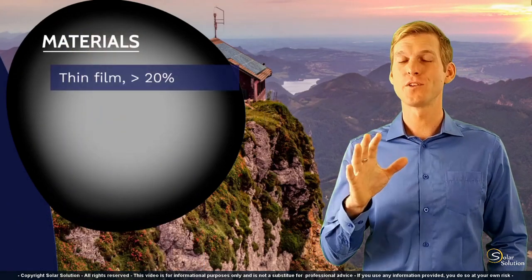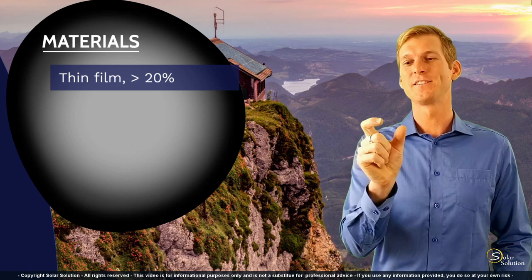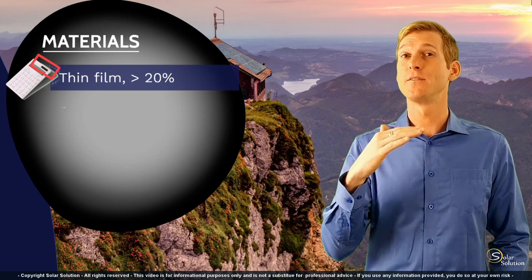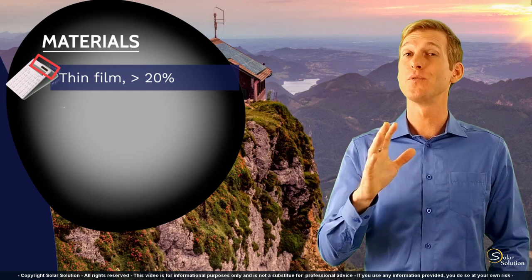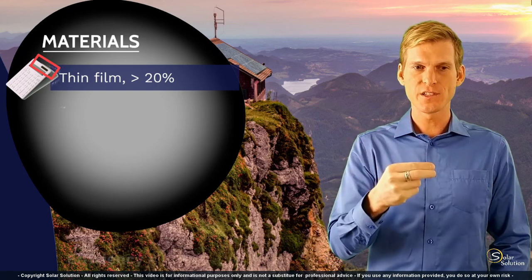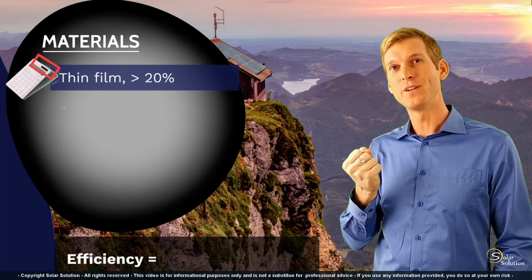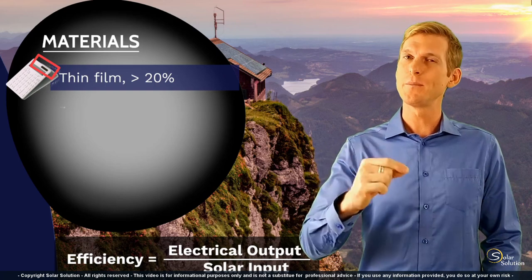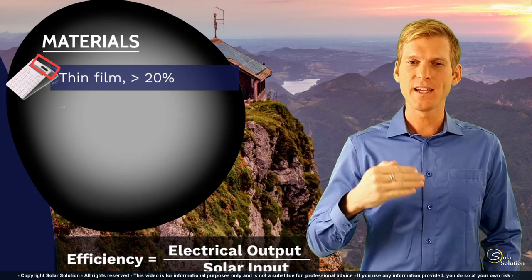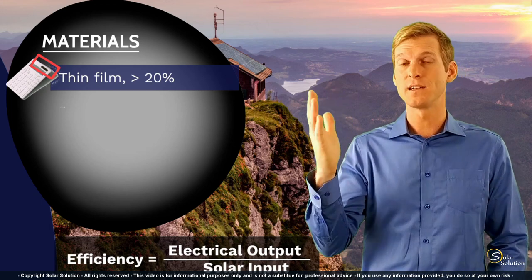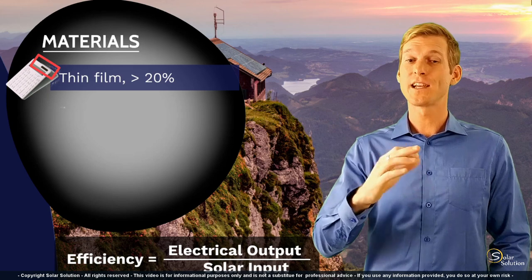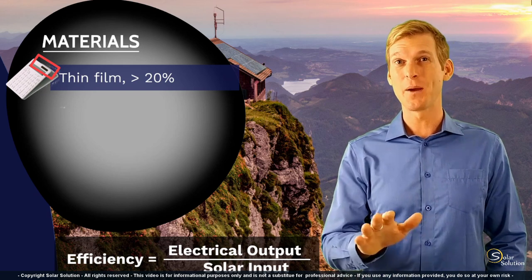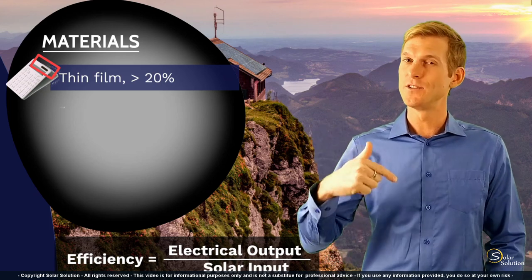The first material type is thin film, which you often find in the small solar panel on an old-school calculator. Thin film can have an overall efficiency of just over 20%. The efficiency refers to the total amount of electrical energy you get out of your solar panel compared to the solar energy that hits it. So at 20% efficiency, 20% of sun power turns into electricity — the other 80% is reflected or, largely, turned into heat, which is why solar panels can get boiling hot on a bright sunny day.